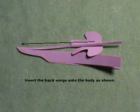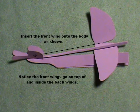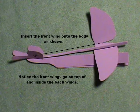Insert the back wings onto the body as shown. The back wings are in place. Now bring out the other front set of wings. Insert the front wings onto the body as shown. Notice the front wings go on top of and inside the back wings.